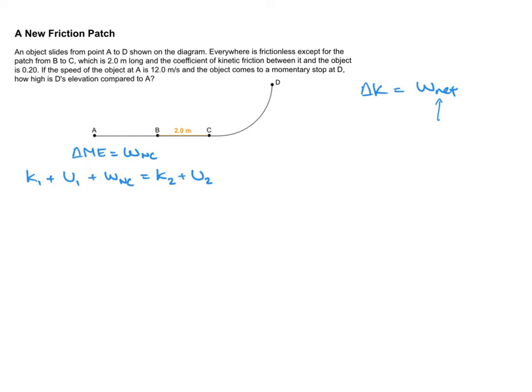And the problem with this question is the work done by gravity. Because the curve from C to D, we don't exactly know what the angle is of the displacement. It's hard to use that formula F times D times cosine of theta. It's just an unknown angle right there. So that's kind of preventing me from just using the delta K equals W net.